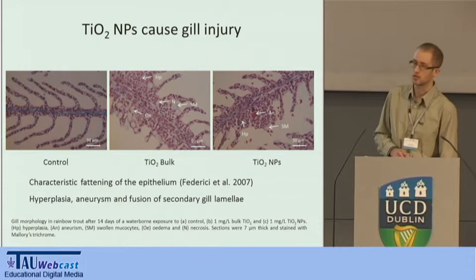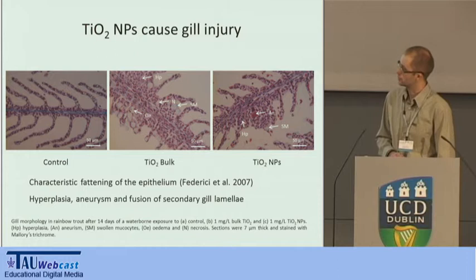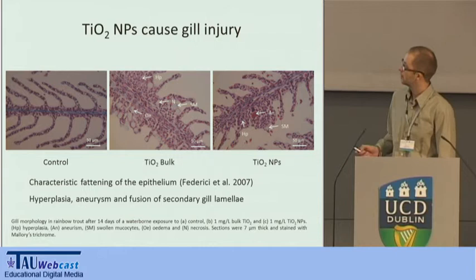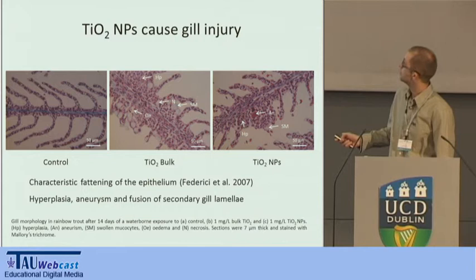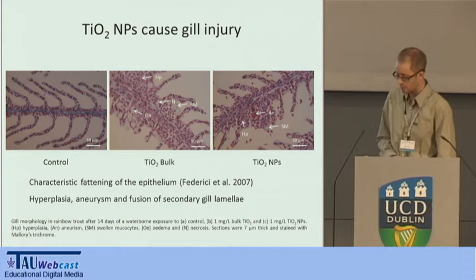Richard has already shown that other classes of nanomaterial, particularly nanotubes, can induce gill pathologies in fish. We've seen a similar thing with the titanium dioxide nanoparticles, consistent with the accumulation findings. There is a characteristic fattening of the primary lamellae in fish exposed to both the nanoparticle and the bulk material, and some secondary pathologies as well — club tips, shortened secondary lamellae, some incidence of edema, necrosis, and hyperplasia in these gills. So there's a gill-mediated interaction between the particle and the fish with associated toxicities.